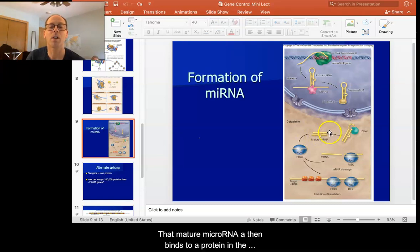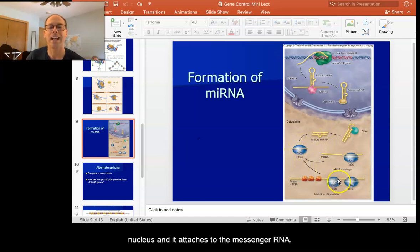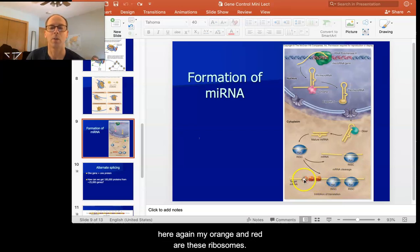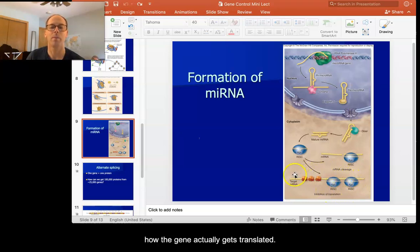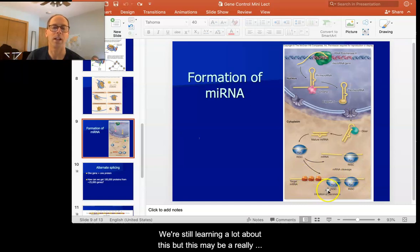And they become this molecule called the mature micro RNA. That mature micro RNA then binds to a protein in the nucleus and it attaches to the messenger RNA. So here's my messenger RNA here again, my orange and red are these ribosomes. The ribosomes get blocked by these micro RNAs. So we've found this to be a very important processing step in how the gene actually gets translated.